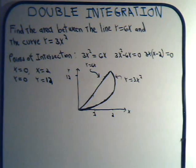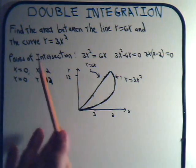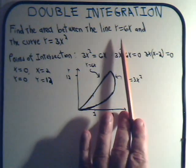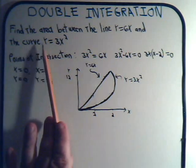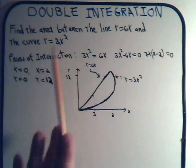Okay, in this video we want to use double integration to find the area between a line, y equals 6x, and the curve y equals 3x squared.